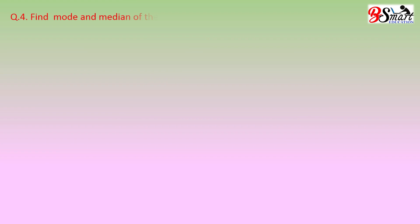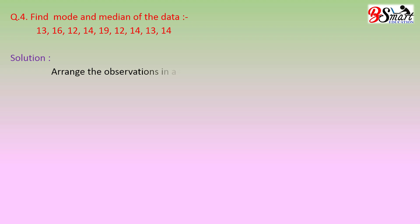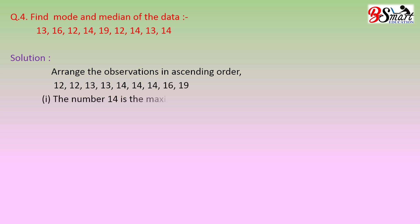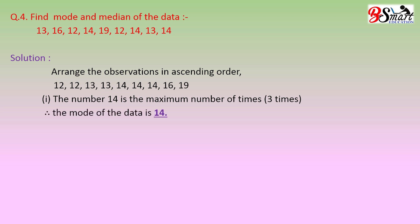Question Number 4. Find the mode and median of the data given. Arrange the observations in ascending order. The number 14 appears the maximum number of times — 3 times. Therefore, the mode of the data is 14.